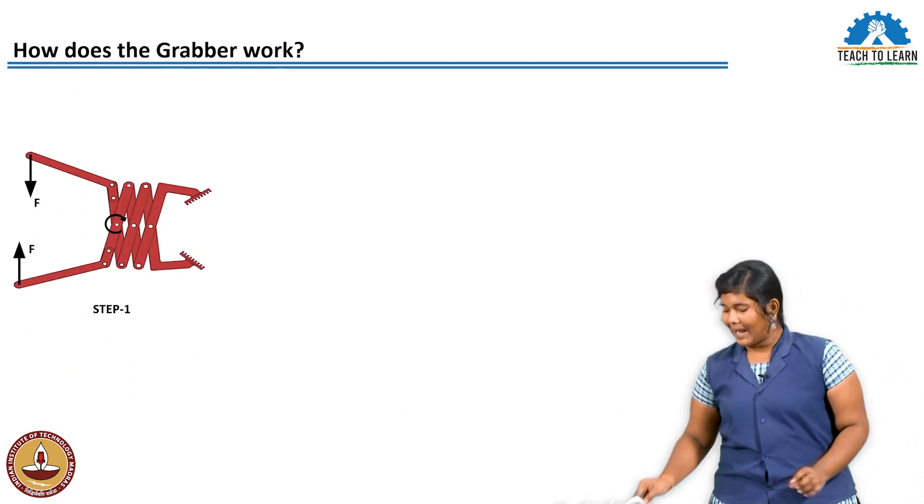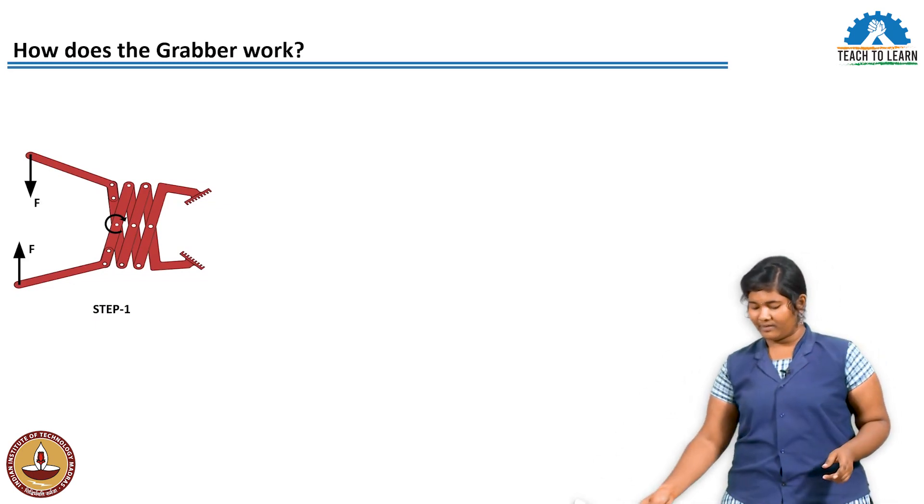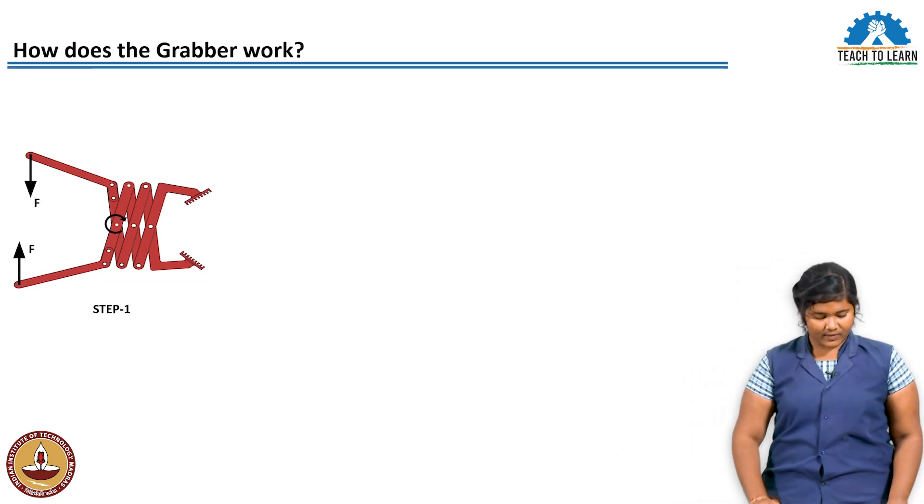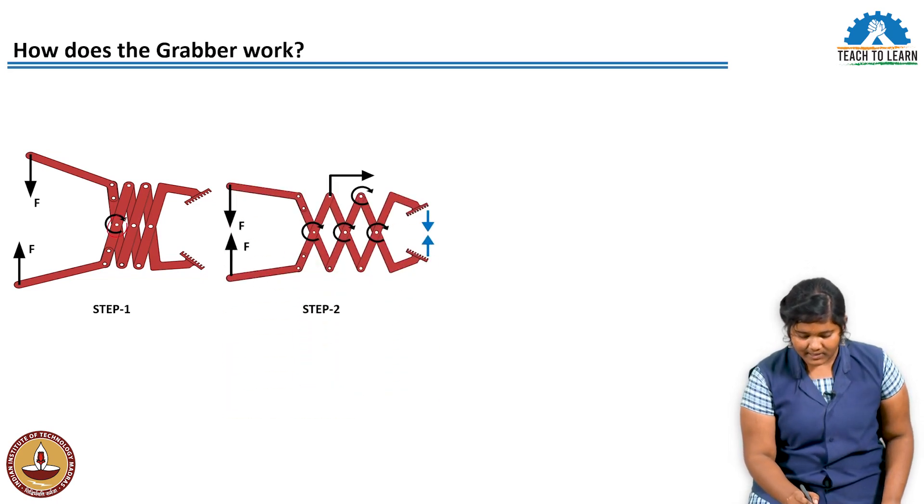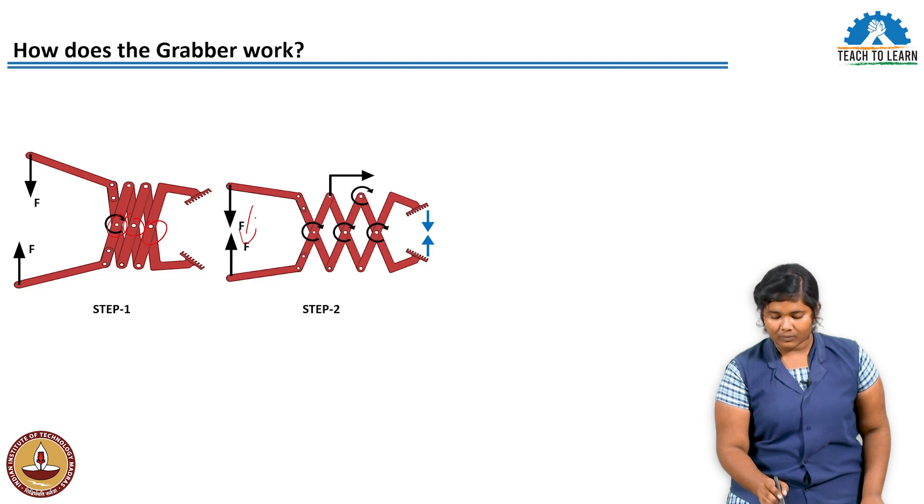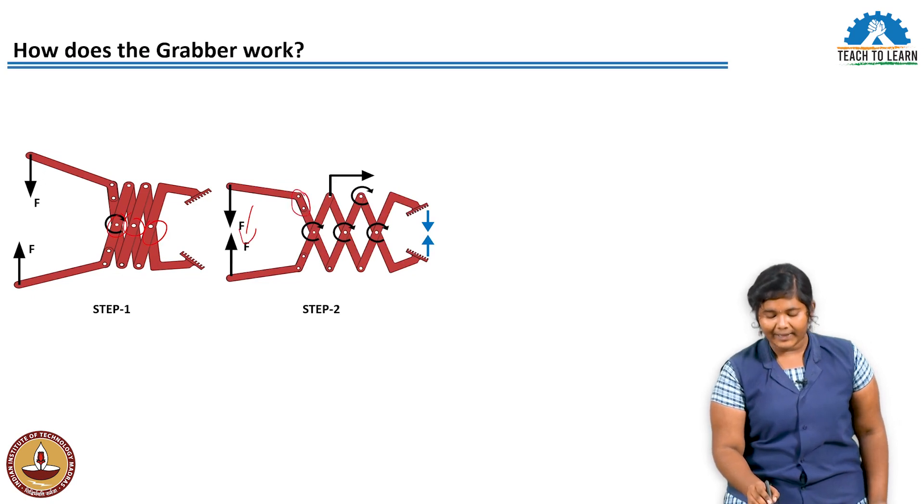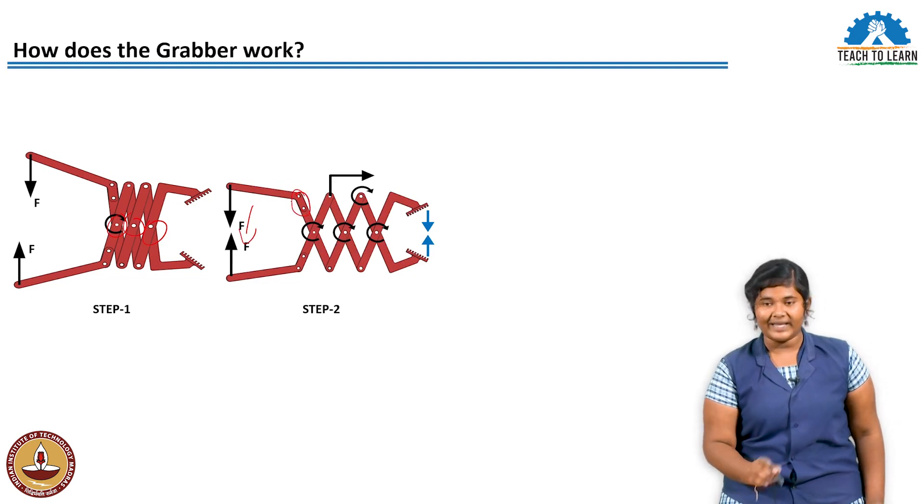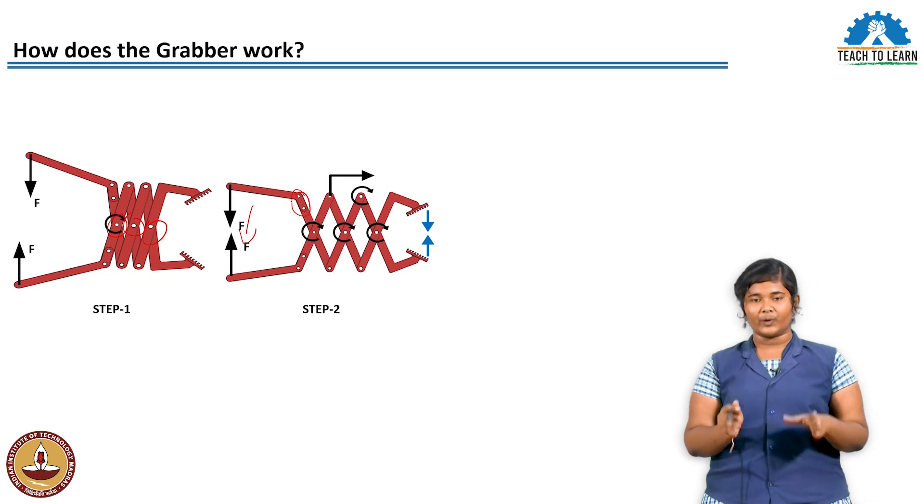When you compress the grabber, one point is hinged and the force is applied. But at the other point, it is not hinged, so it will move. That's the general motion - rotational motion is transferred.